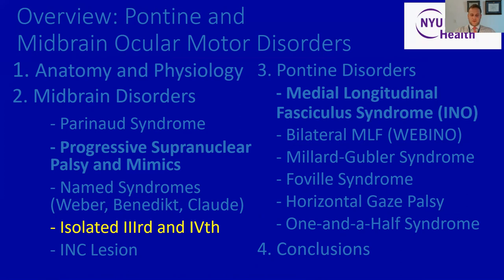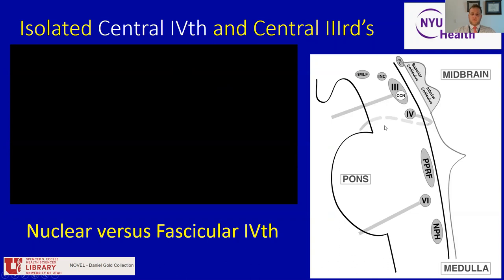Now let's talk briefly about isolated third and fourth cranial nerve lesions. The fourth cranial nerve is at the level of the inferior colliculus in the more rostral aspect of the dorsal midbrain. The fourth cranial nerve is unique in that its fascicle exits on the opposite side of the brainstem and then loops around to innervate the superior oblique, whereas the third, sixth, and other cranial nerves typically exit on the ventral side. Because the fourth cranial nerve nucleus is so superficial to the dorsal aspect of the brainstem, there's very little difference between a nuclear and fascicular fourth cranial nerve palsy.